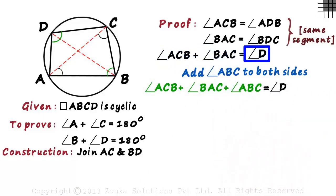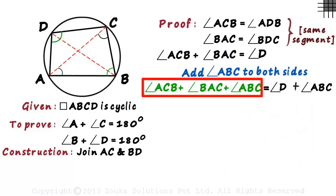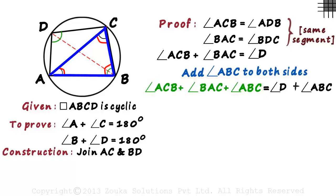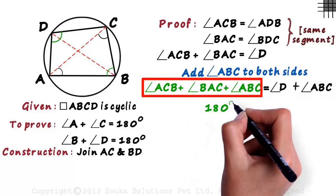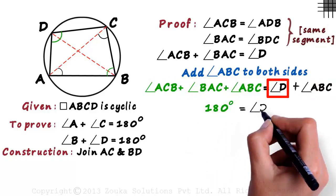This left hand side, as we saw, is the sum of all angles of triangle ACB, which equals 180 degrees. The equation we get is 180 degrees equals angle D plus angle ABC.